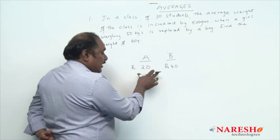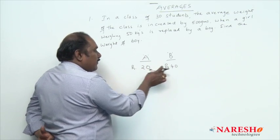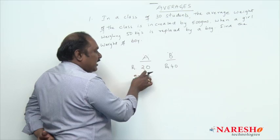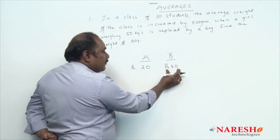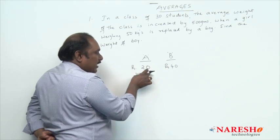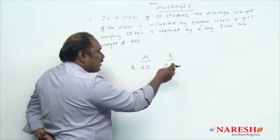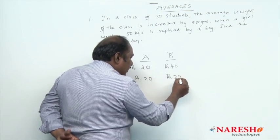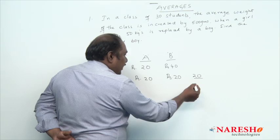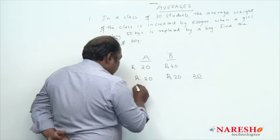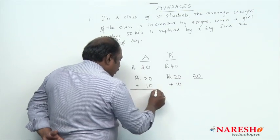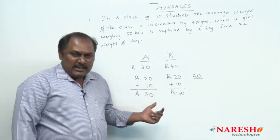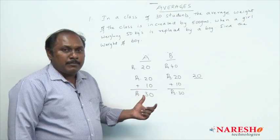Without using the formula, how to find the average? A has 20 rupees, B has 40 rupees. B has 20 rupees more than A. Take out that extra 20 — now both A and B each have 20, with 20 left over. Distribute that extra 20 equally: A gets 10, B gets 10. So both have 30 rupees. The average money with A and B is 30 rupees. This is how we think about average without using a formula — it is uniform or equal distribution.